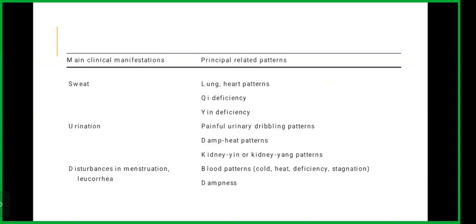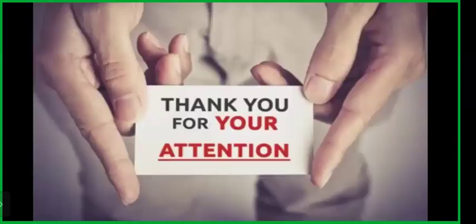For disturbances in menstruation like leukorrhea, those are blood patterns — which could be cold, heat, deficiency, stagnation, depression or dampness. Thank you so much for your attention.